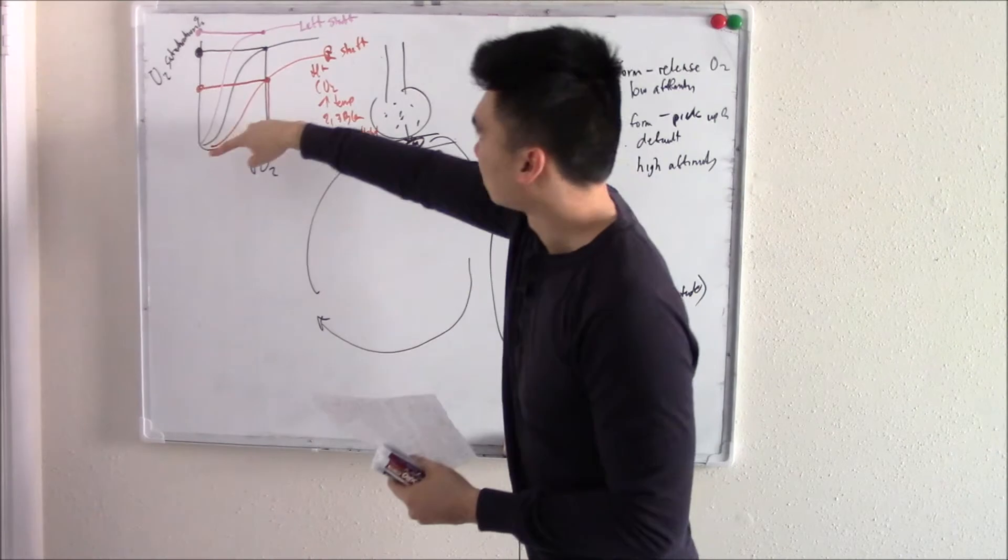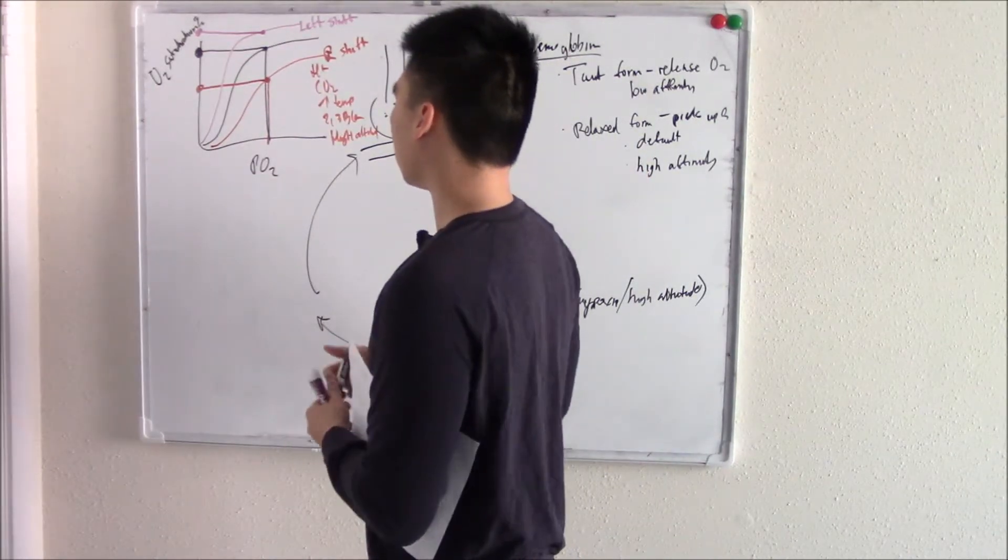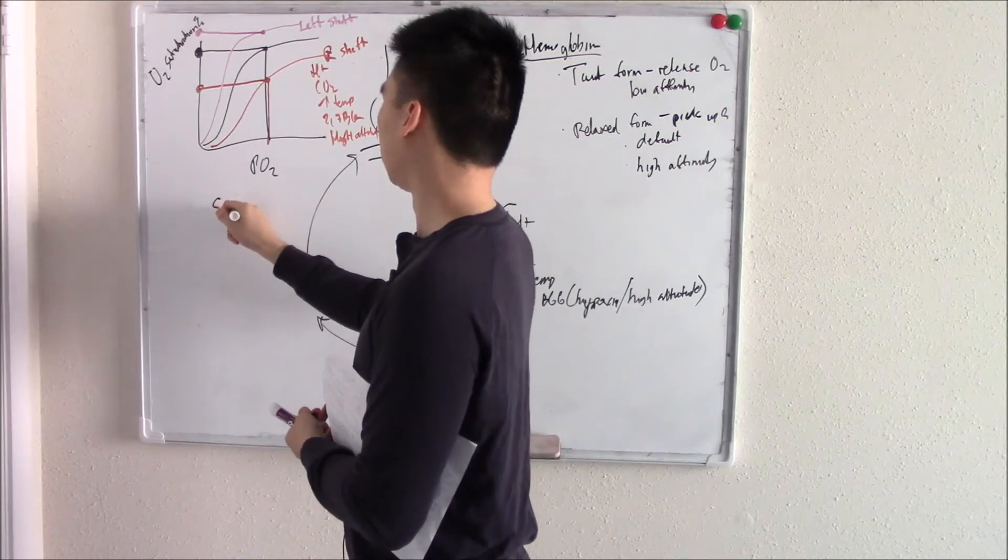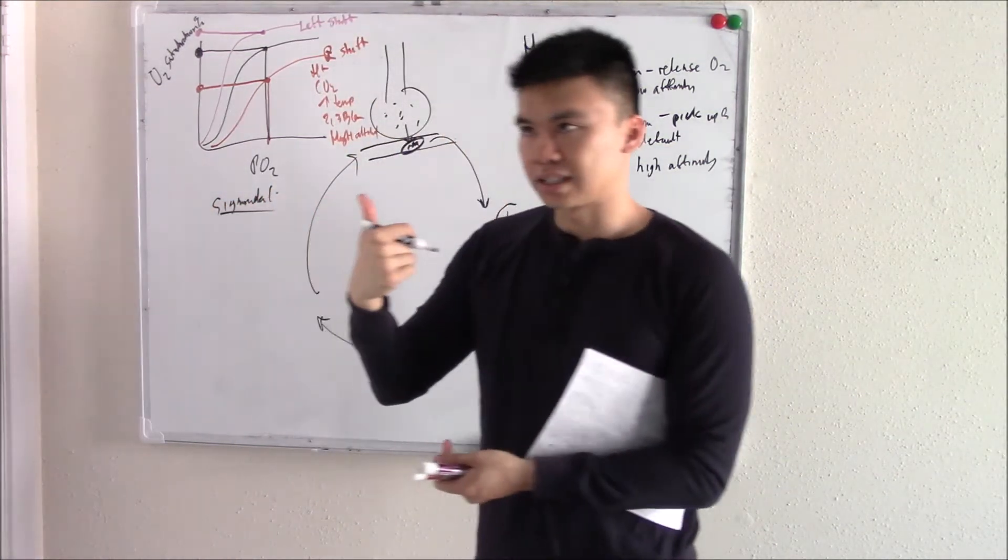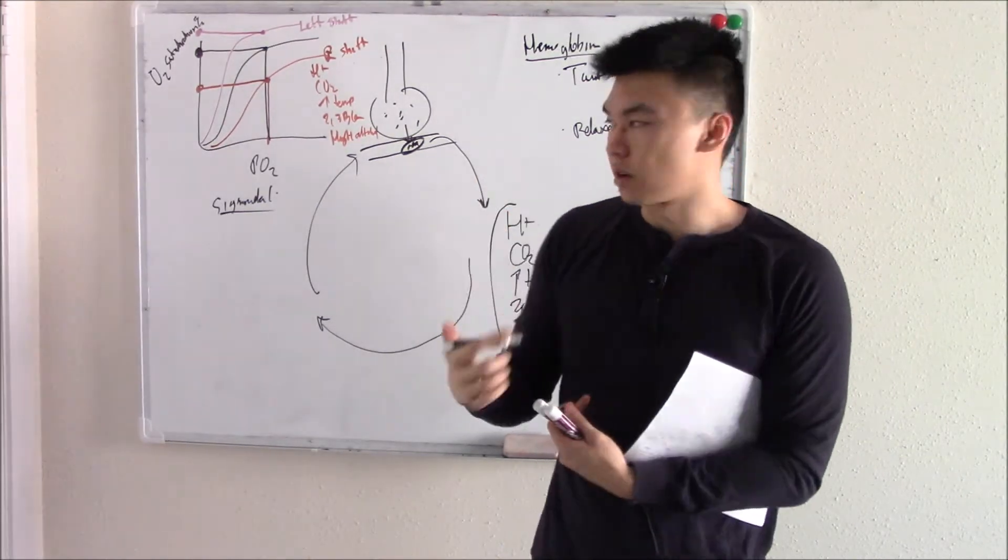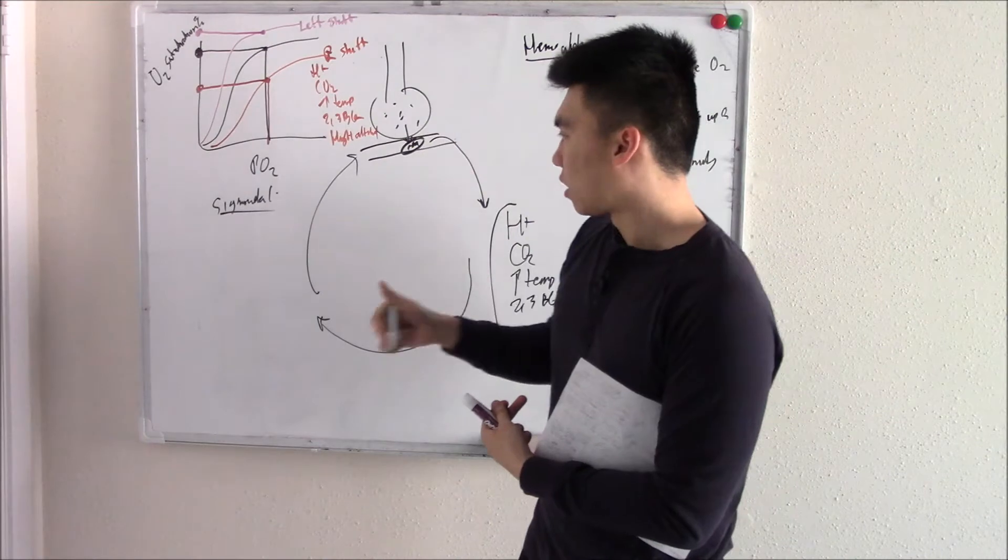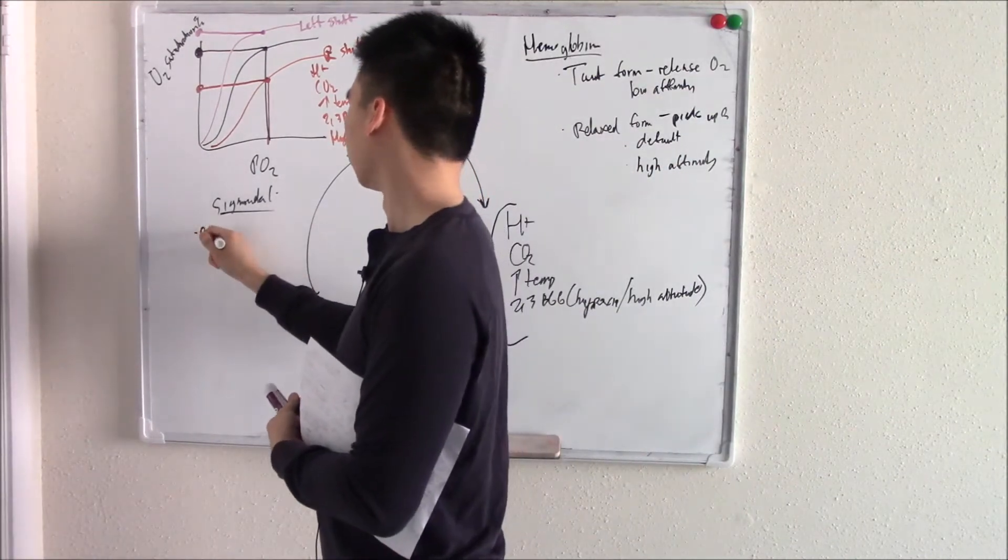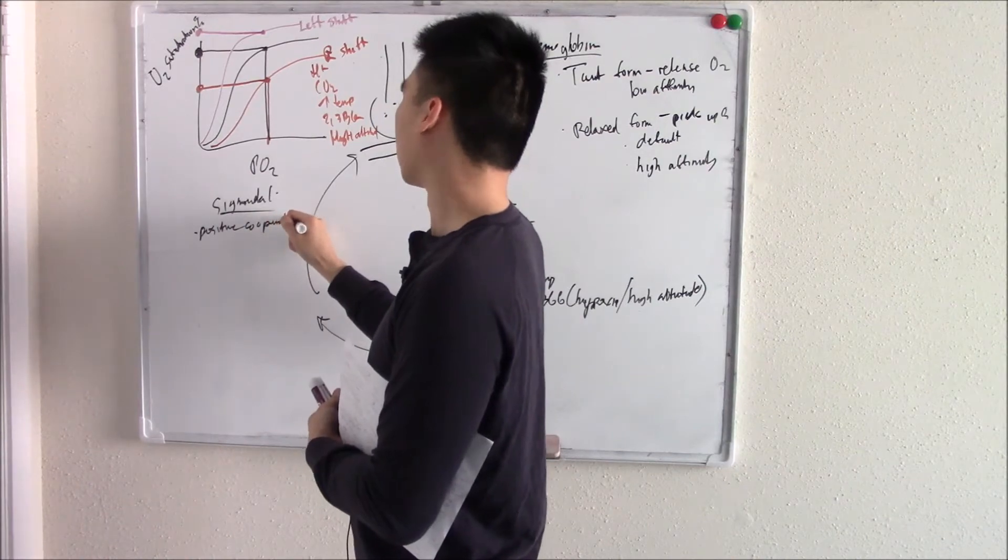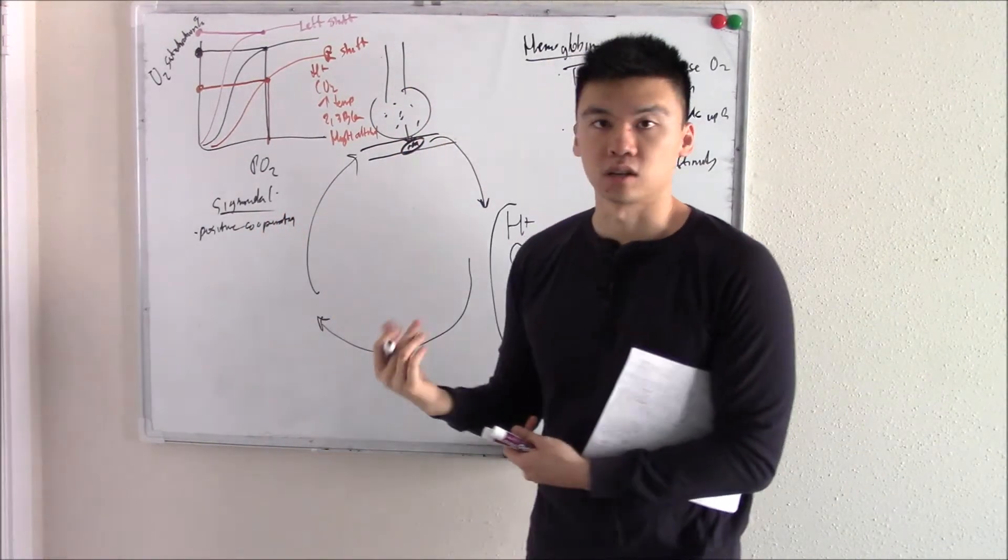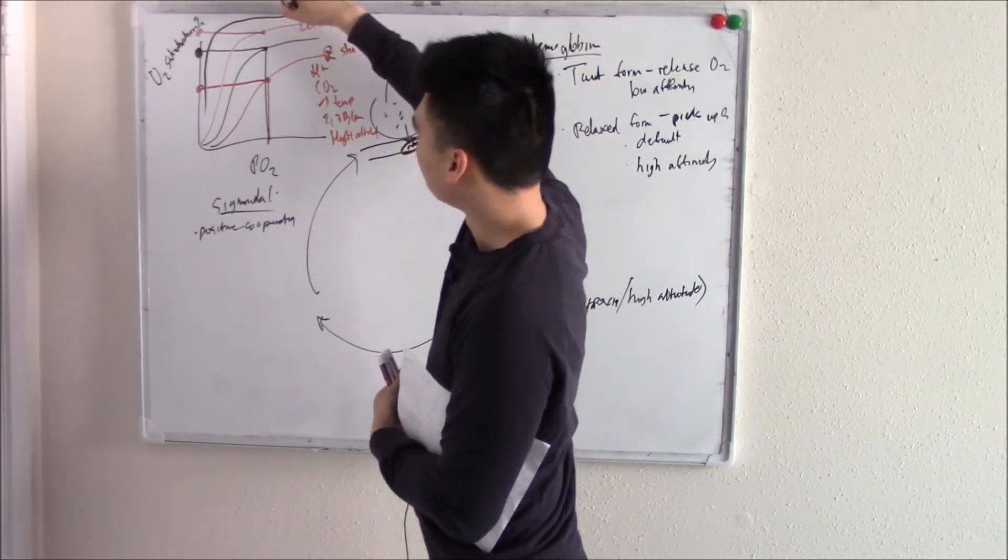Now why does this curve look like this? Why does it look sigmoidal? It looks sigmoidal because your hemoglobin binds to four molecules of oxygen. And when it binds to the first, it makes it easier to bind to the second, which makes it easier to bind to the third. So it goes whoop, kind of sigmoidal. We call that positive cooperation. Not everything does this.